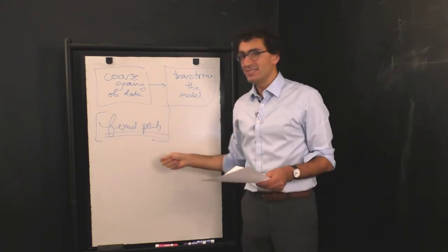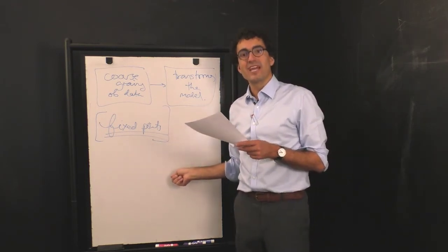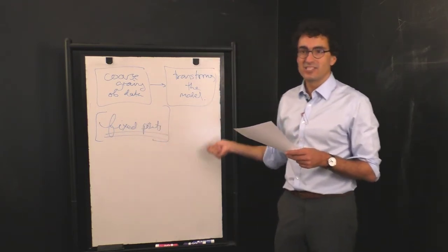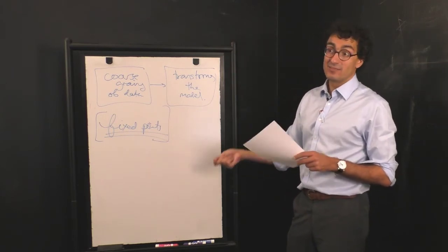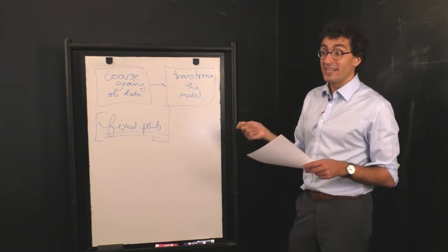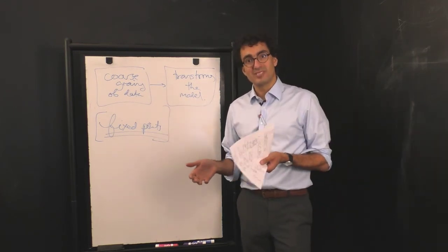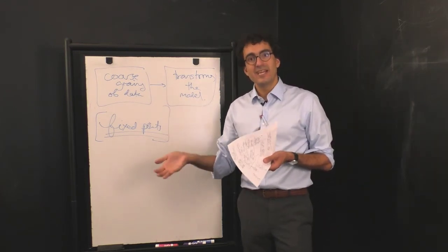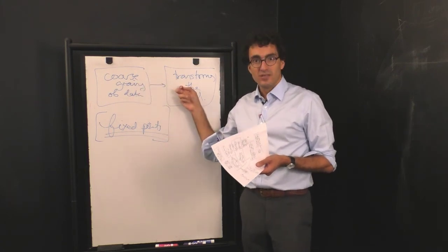Here when we went from a to t, we simplified the world. It turned out by coarse-graining we could forget things. We could forget details. The story we had to tell about the system got simpler. In other cases when we coarse-grain, what we're going to find is that we have to enlarge our model space, that we have to make our models more sophisticated. In those cases, as we see, simplifying the data makes the model harder to do.